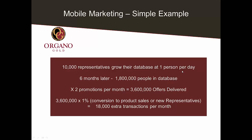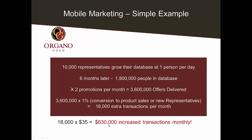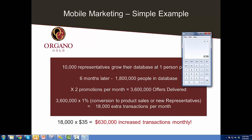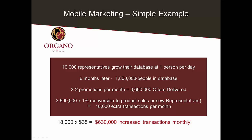The math gets really great. 10,000 reps building a database at even one person per day — six months later that's 1.8 million people. If you send out two product offers a month, that's 3.6 million direct offers. At 1% conversion, that's 18,000 additional transactions a month, $630,000 a month, or $7 million of increased top-line revenue annualized — just from sending out some texts.